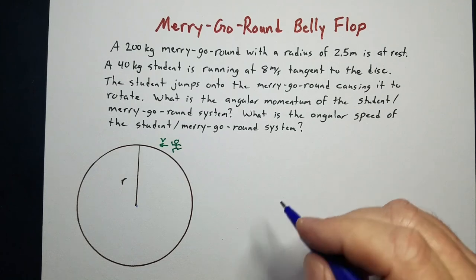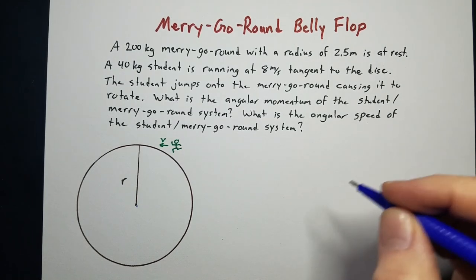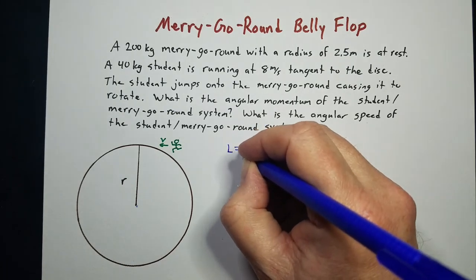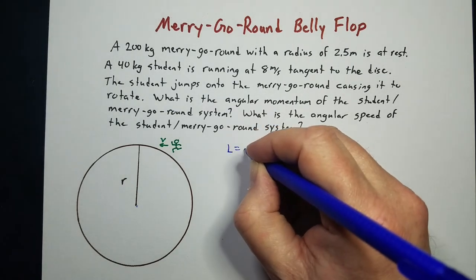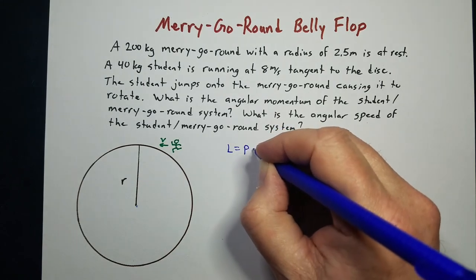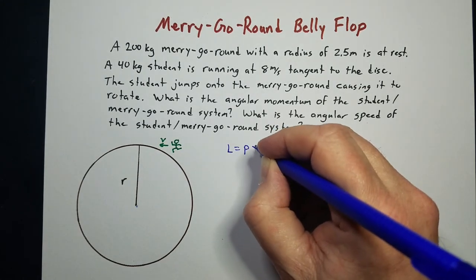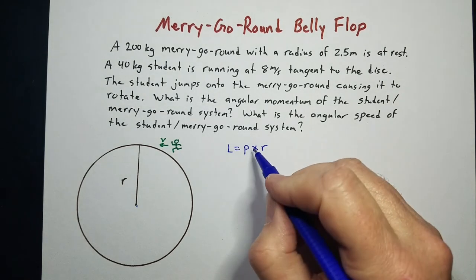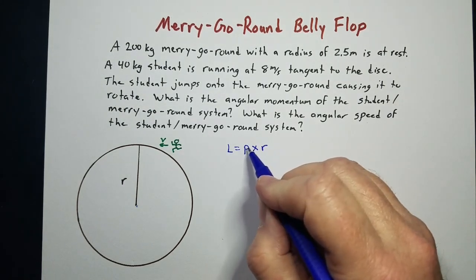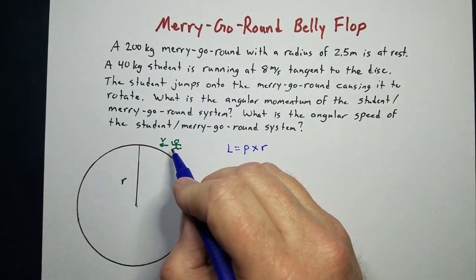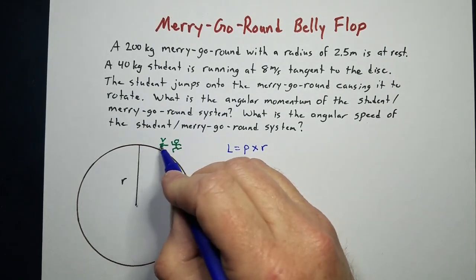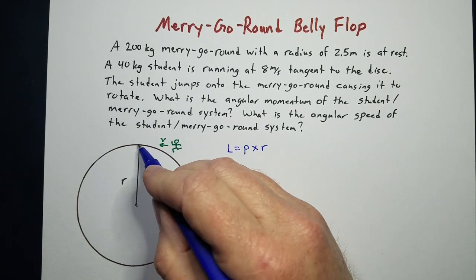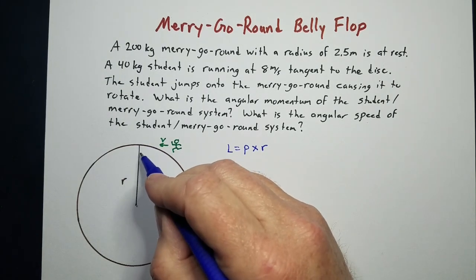First of all, for angular momentum, there is this equation where angular momentum is equal to the linear momentum of the object cross the radius. This is a cross product, which means that these two work best when they're at 90 degrees to each other. This student's going to jump straight on, running this way tangent to the circle, and the radius is going to be perpendicular to that motion.